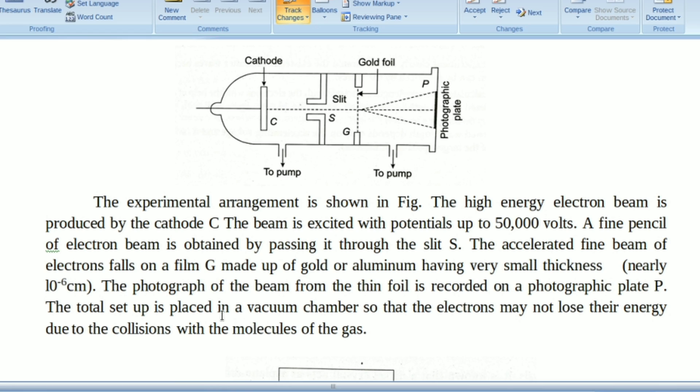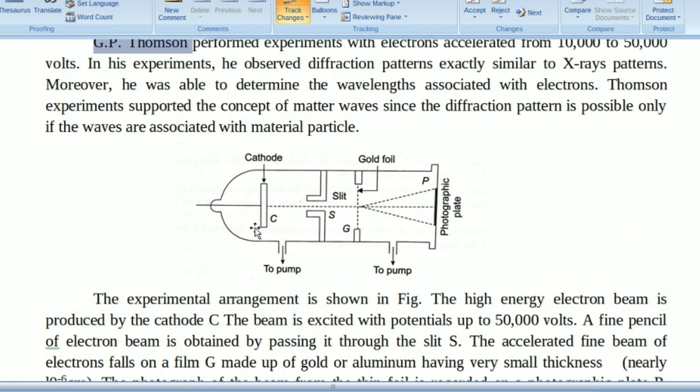The total setup is placed in a vacuum chamber so that electrons may not lose their energy due to collisions with molecules of the gas. This is cathode C, it releases electrons with 50,000 volts. This is slit S, and this is G, a very thin film made with gold or aluminum.